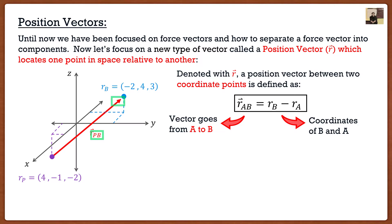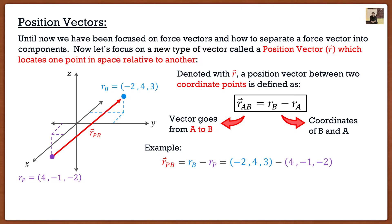The key with position vectors is direction. If the arrow starts at the purple point and goes to the blue point, that's position vector PB. If the arrow went the other way, it would be position vector BP. To compute position vector PB, I take the coordinate points of the blue point and subtract the coordinate points of the purple point.